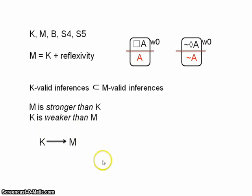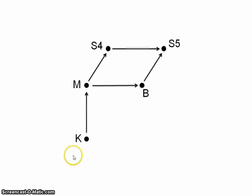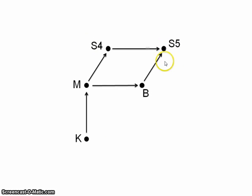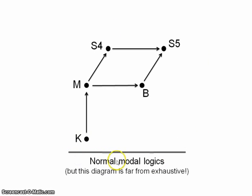This allows us to very easily visualise the relationships between all of these logics. This image here is taken from one in Rob Girle's book, Modal Logics and Philosophy — a simple visual representation of how the systems relate to each other. S5 is the strongest system we've encountered, which makes sense: S5 is reflexivity plus symmetry plus transitivity, corresponding to M, B, and S4 respectively. All of these systems are normal modal logics, though there are other normal modal logics I'm probably not going to examine — maybe in a later video.